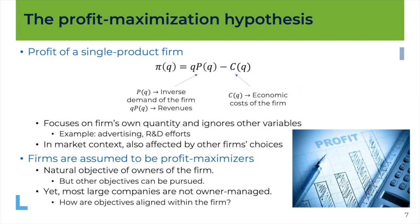Now comes the profit maximization hypothesis, which we will develop further in the course. Profit is traditionally written using the Greek letter π. The profit of a firm is the difference between total revenue and total costs — the economic opportunity cost. q times p(q) are the revenues, p(q) being the inverse demand of the firm. We focus here on the firm's own quantity. For now we ignore other variables such as advertising or research and development effort. It doesn't mean we won't analyze these variables, but we will do this step by step — considering first short-term decisions like choosing quantity, then long-term decisions like advertising or R&D.